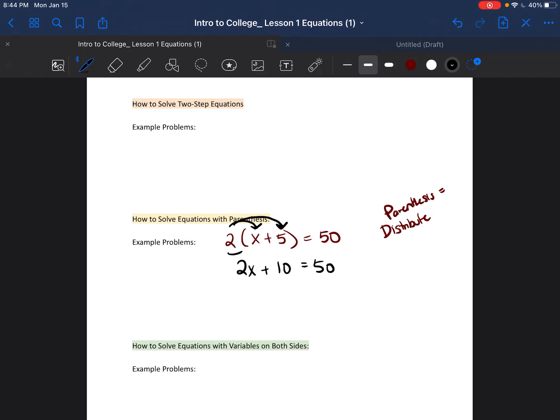Remember, the two steps of the two-step equation. One, we're going to add slash subtract. And two, we're going to divide. The 10 is a number that is not attached to the x. So we're going to get rid of the 10 first by subtracting it from both sides. We're left with 2x is equal to 40.